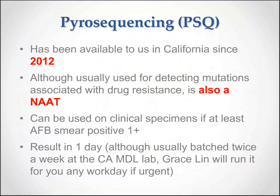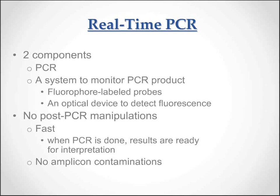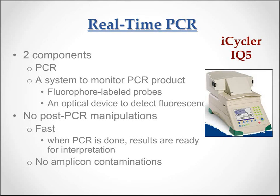Here in California we've had available to us, since 2012, pyrosequencing. Although we usually use pyrosequencing for detecting mutations associated with drug resistance, it is also a NAT test and can be used on clinical specimens if it is at least AFB smear positive 1+. The result is available in one day. Typically at the California MDL lab we batch it twice weekly; however, the chief technician there, Grace Lynn, will run it for you on any workday if the need is urgent. It's a real-time PCR with two components — a system to monitor the PCR product — and there are no post-PCR manipulations, so no chance for amplicon contamination. A highly effective test.